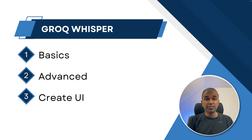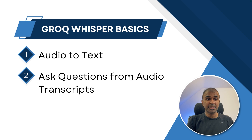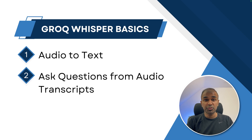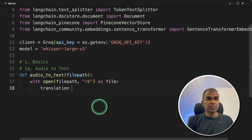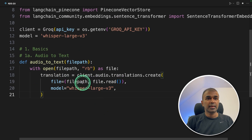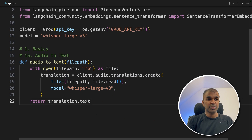So in this, first we are going to create a basic app, then an advanced app, and finally create a user interface. In regards to the basic app, we are going to create a function called audio_to_text where we convert audio to text using Whisper. In this function, we are opening a file, and that MP3 file is using Whisper to convert from audio to text. Finally, we are returning the translated text. The audio we are going to give is a podcast about Groq's AI chip, in the same folder.